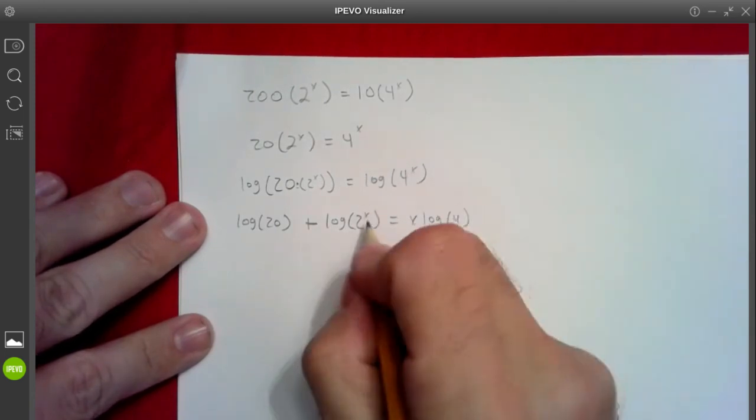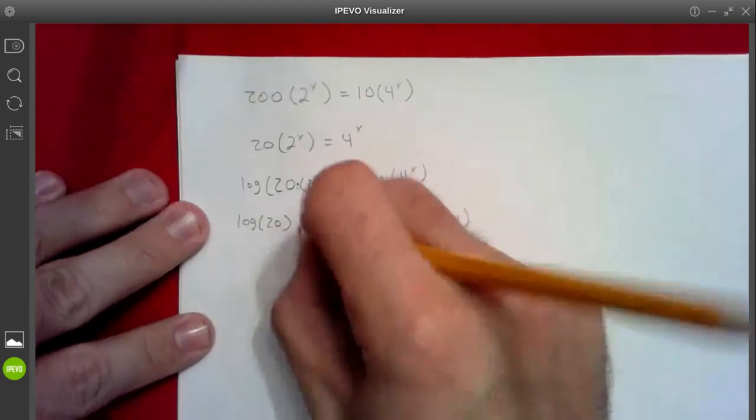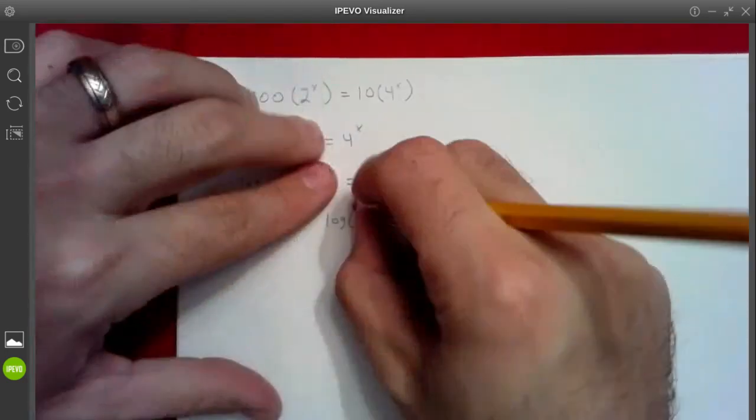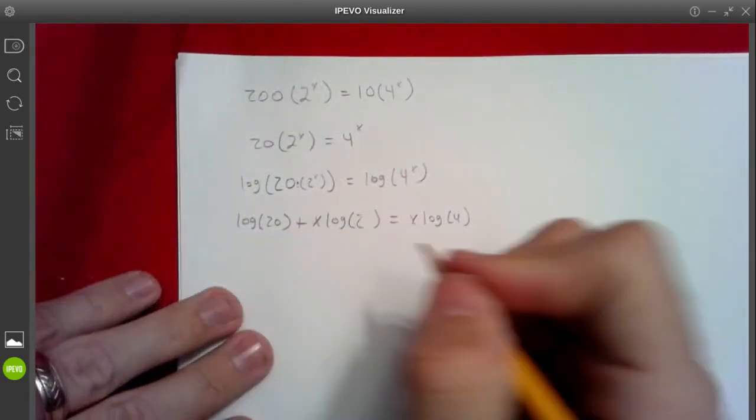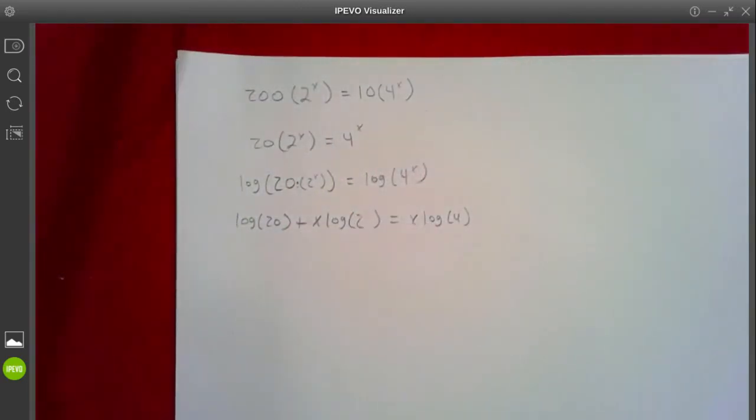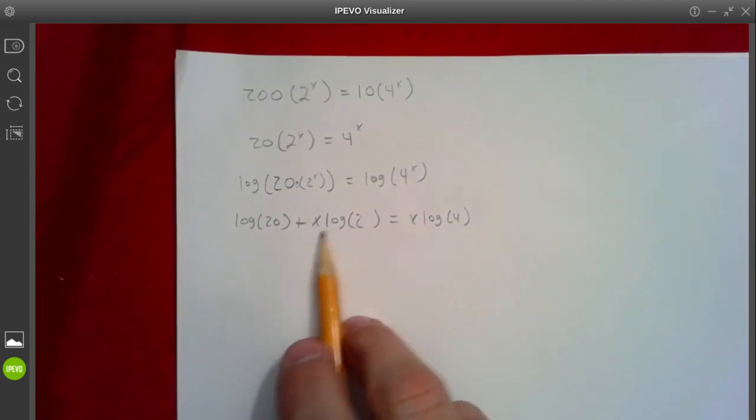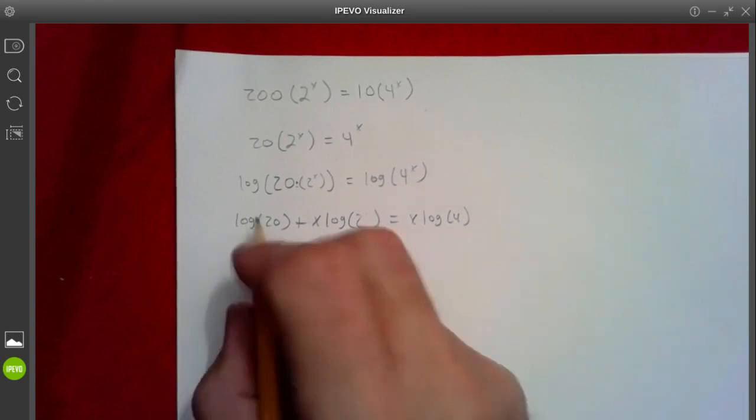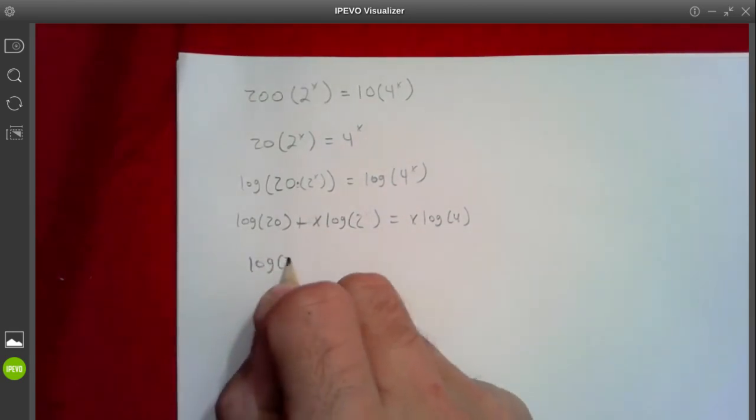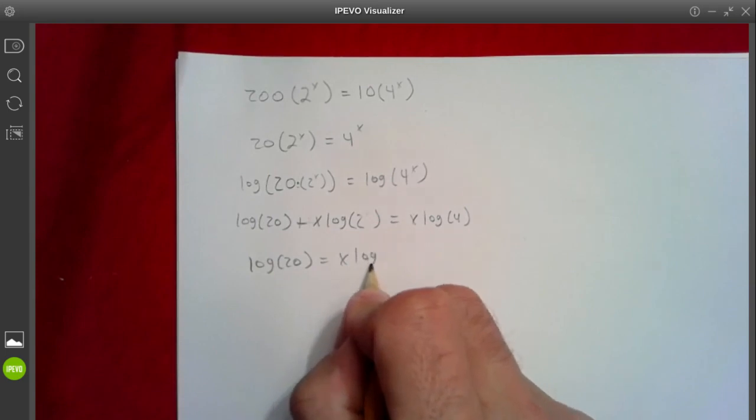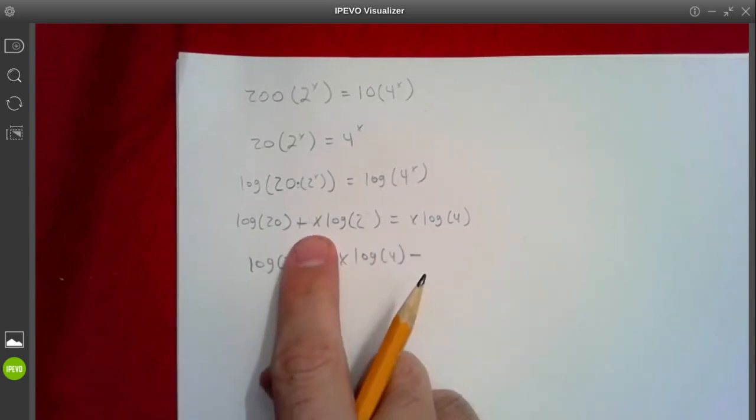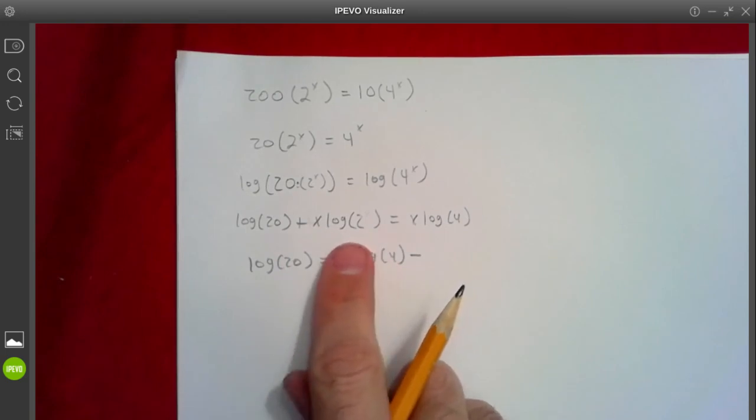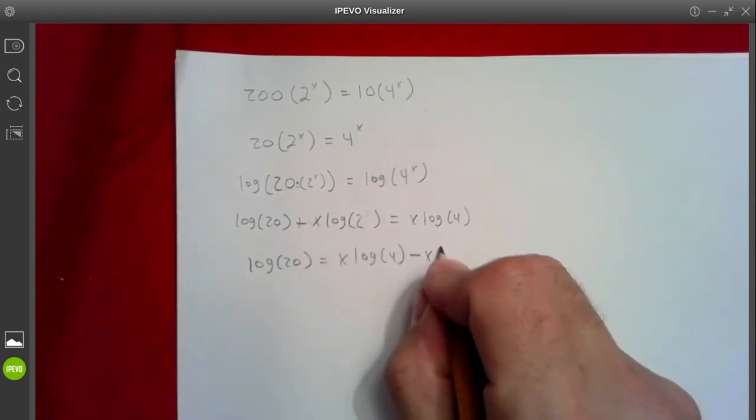You know what, let's go ahead, we'll bring down our exponent as well. So this is going to be plus x log 2. Alright, move all of our x's onto one side, so let's move this term to the right hand side. We'll have log 20 equals x log 4. Subtract, because we're going to have to minus this x log 2 to make that happen. So minus x log 2.